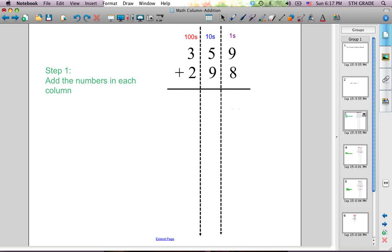Now we need to add the digits in each column. 9 plus 8 is 17, we record our 17. 5 plus 9 is 14, we record our 14. 3 plus 2 is 5, we record our 5.